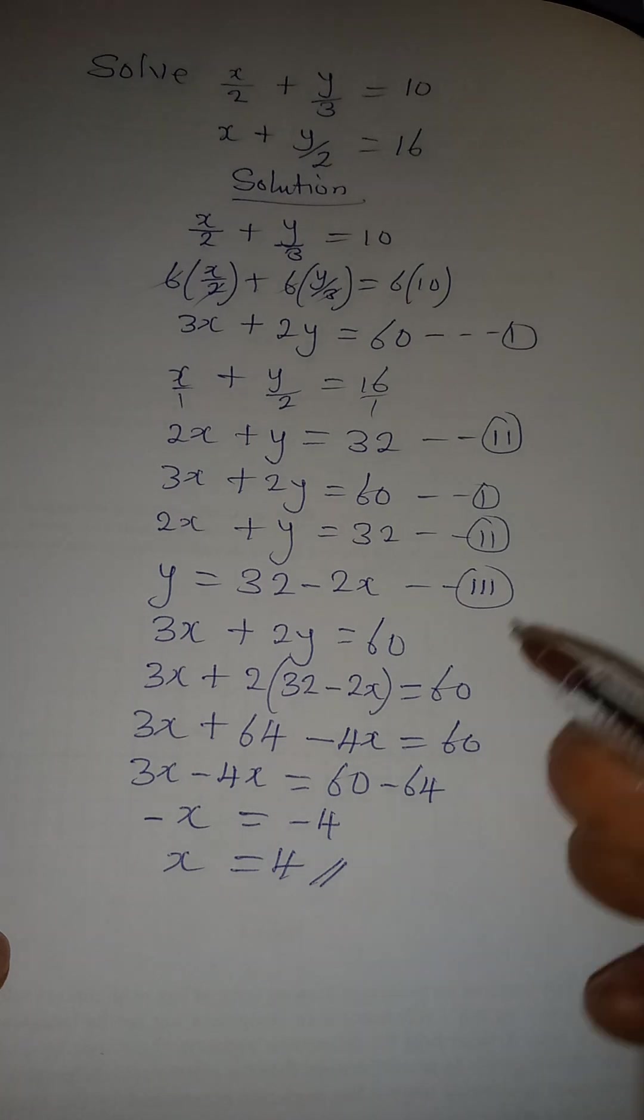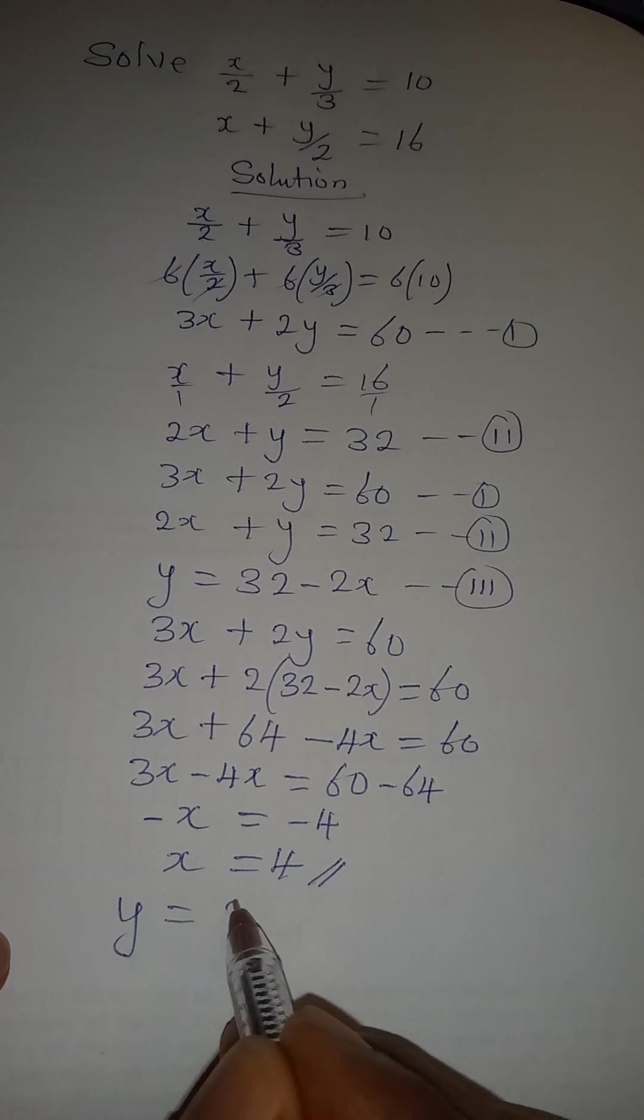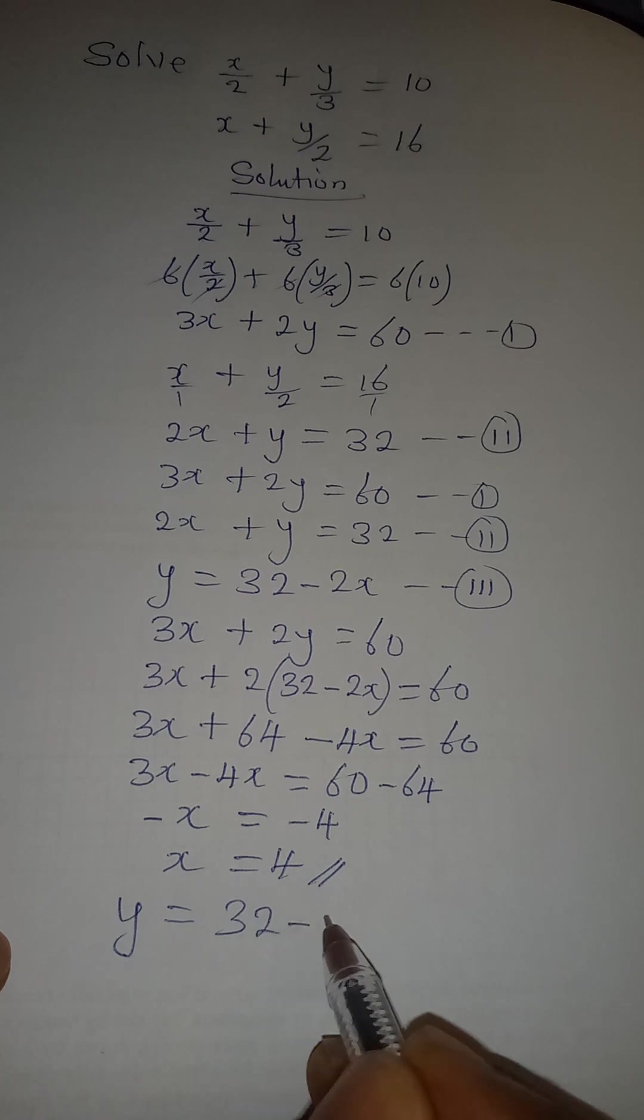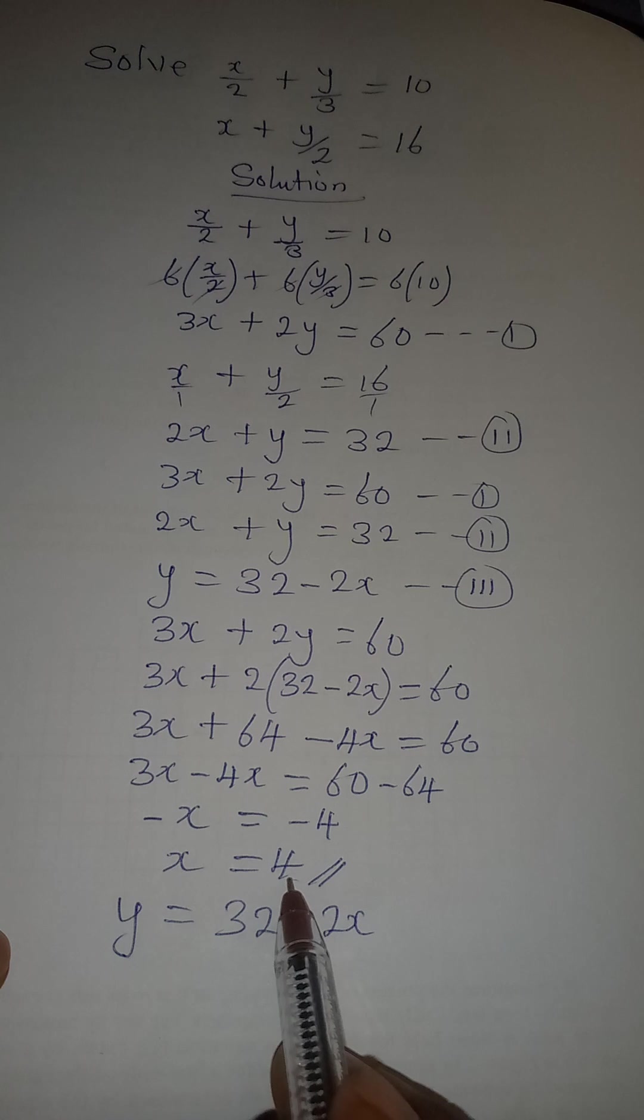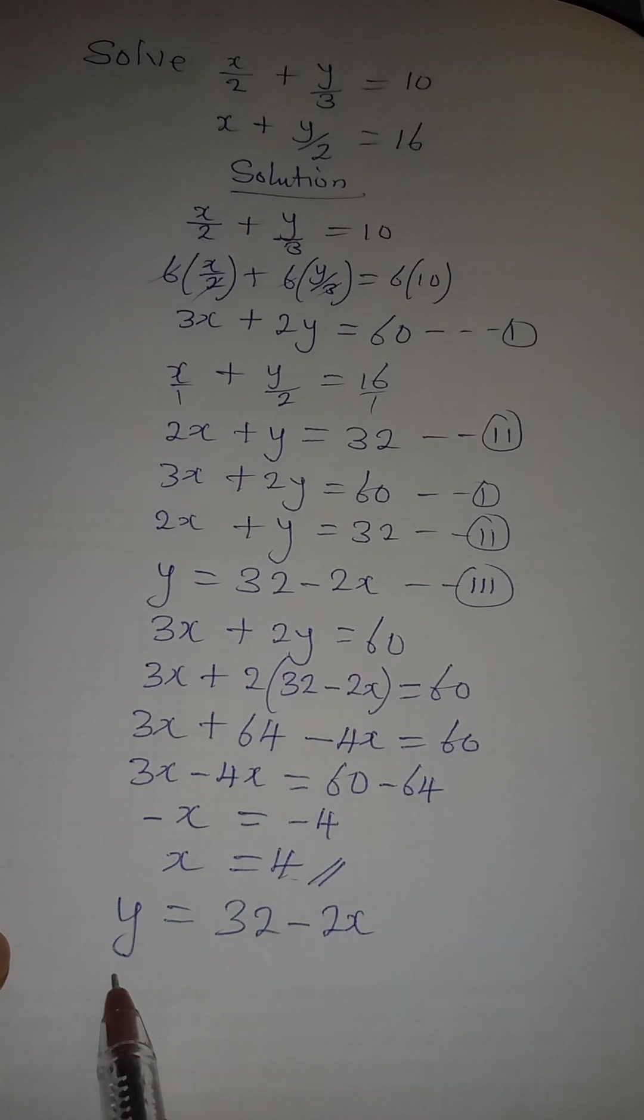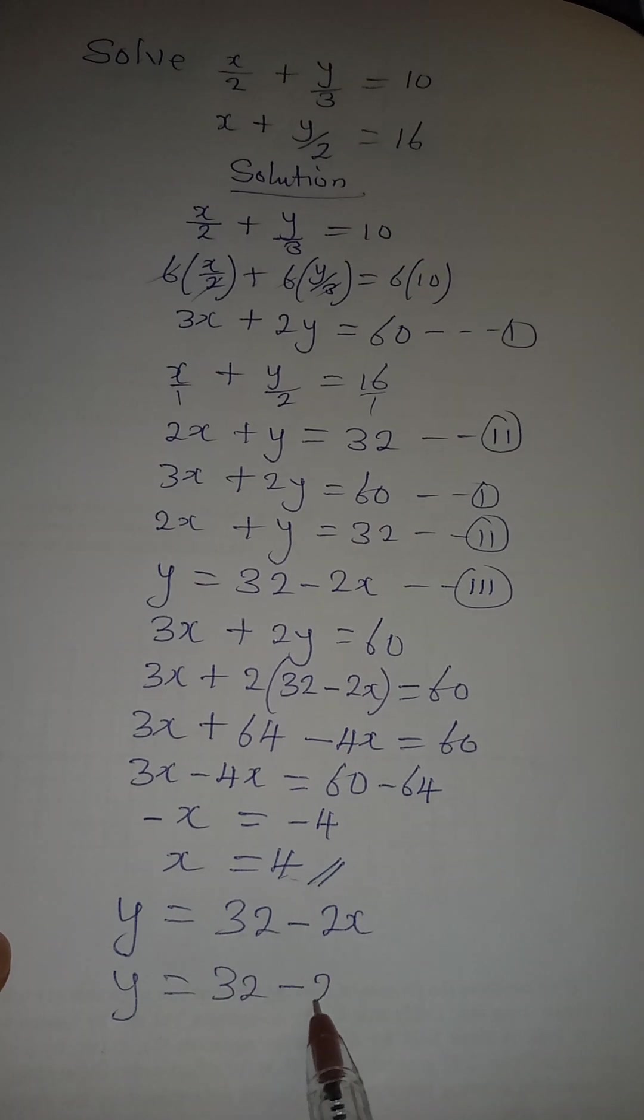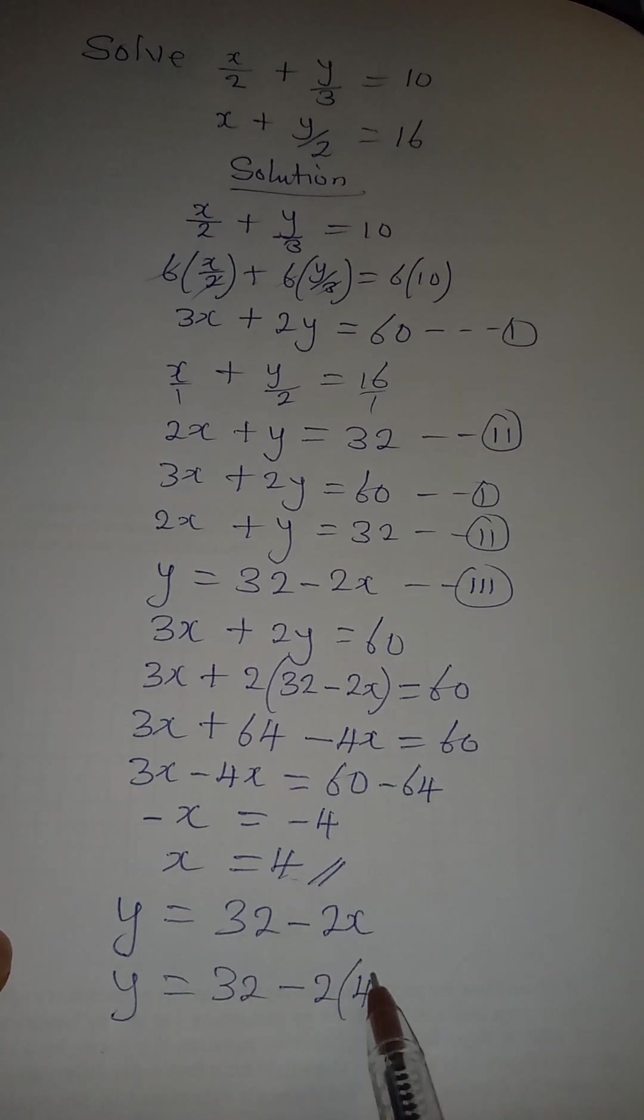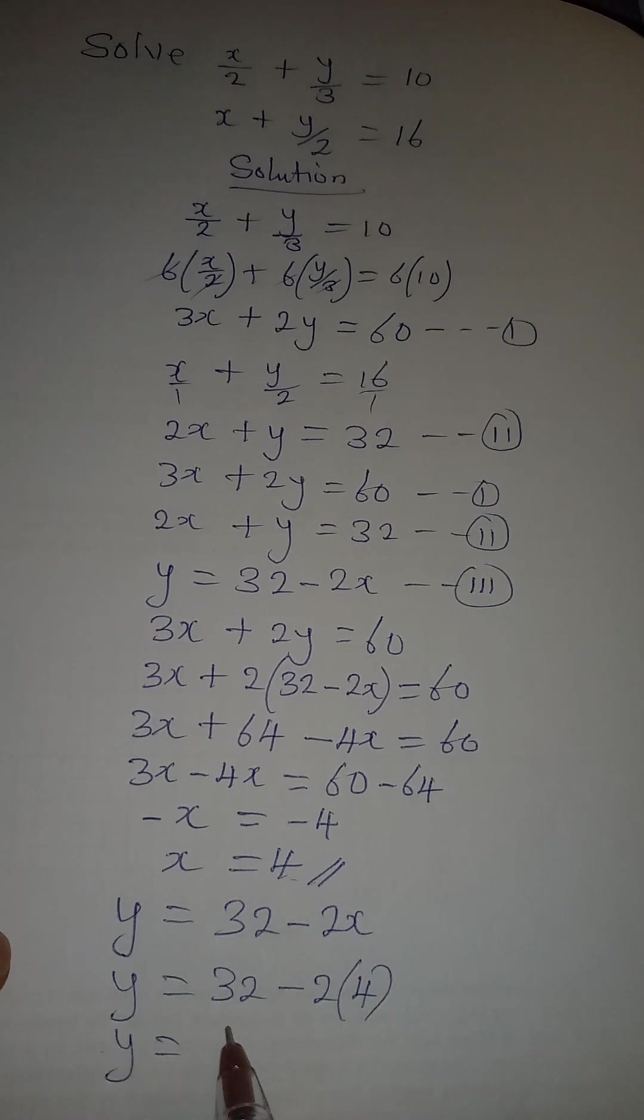And now we can use our equation 3 that says y is equal to 32 minus 2x. So now that we have the value for x, we can substitute into this equation 3. So it will be y equal to 32 minus 2 into 4, because x is now 4. Y will be equal to 32 minus 8.